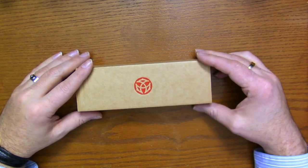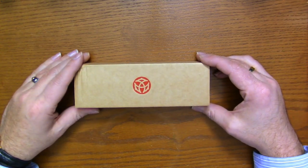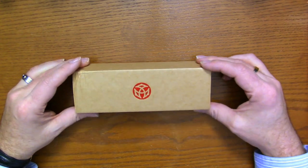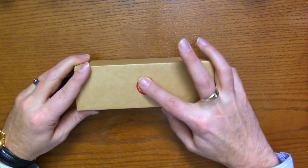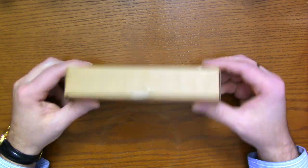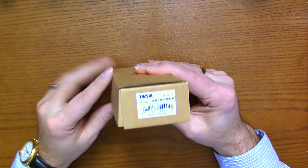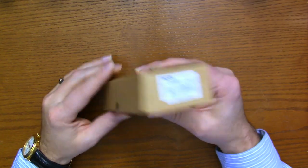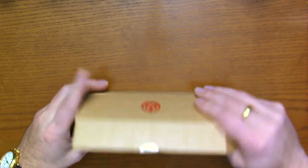Here we have the box for the TWSBI VAC Mini. It's your standard TWSBI box with the nice logo on the top and VAC Mini on the side here. Let's just get right to it and open it up.